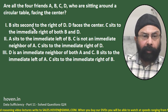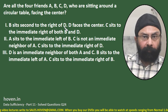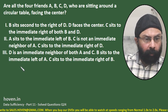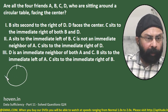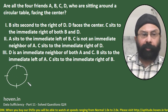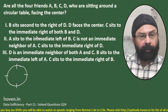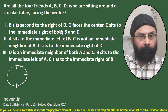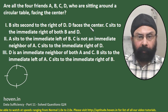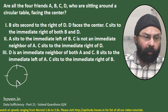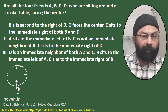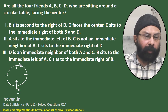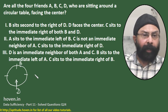Statement 1: B sits second to the right of D, and D faces the center. We draw a small circular table with four positions. D is drawn facing the center, and B is second to the right of D — imagine yourself sitting at this table, so B comes at the opposite position.